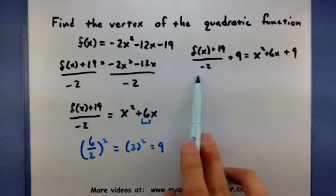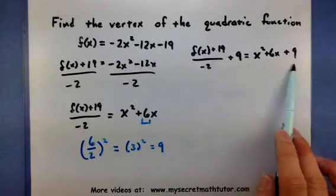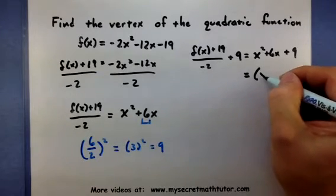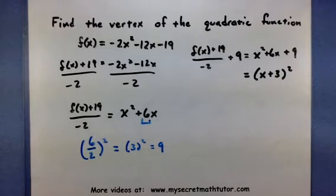I've collected quite a mess on the left side of my equal sign here, but on the right side, I've set things up perfectly so it will factor nicely. x squared plus 6x plus 9 factors into (x + 3) squared.